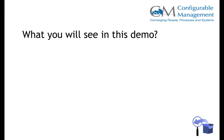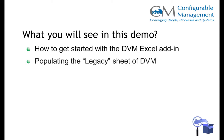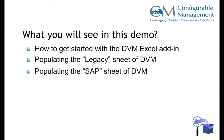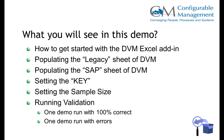We're going to cover how to get started using DVM, how to populate the legacy sheet, how to populate the SAP sheet — those are the bare minimums that you need to make DVM work. Then how to set a key between those sheets, because it needs to know what the key is going to be. Set a sample size, then we're going to do a perfect run and then a run with some errors, and we'll take a look at the dashboard as well.